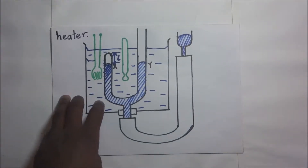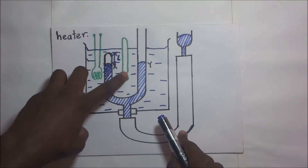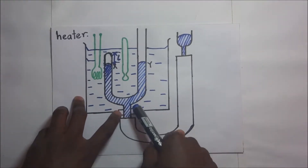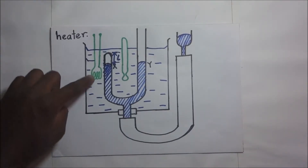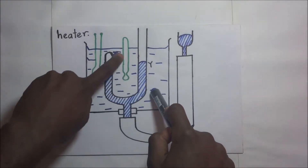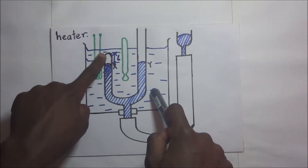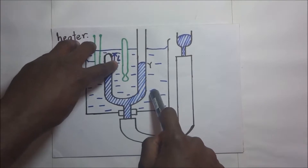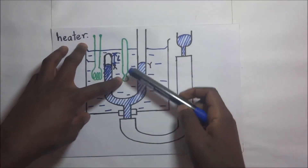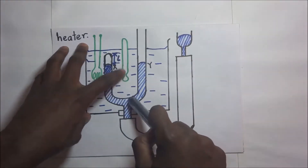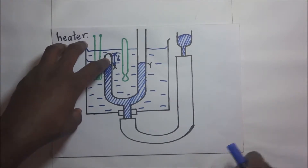The volume of a fixed mass of gas is directly proportional to the absolute temperature, measured using this thermometer, provided the pressure is held constant. In this experiment, we heat this water, record the temperature, and measure the corresponding volume by measuring the length of the gas column. We repeat this for a new temperature and corresponding volume — that is how we verify Charles's Law.